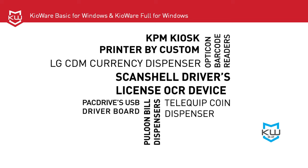KPM kiosk printers by Custom have also been added, allowing for printing in several formats from receipts to tickets, and the Custom raw Windows printer, which uses the Windows printer driver but supports raw commands. Support has been added for monitoring and retraction with Custom printers, and for the Elatec TWN4 reader. This is an all-in-one proximity reader compatible with over 50 RFID technologies, including NFC and Bluetooth Low Energy.